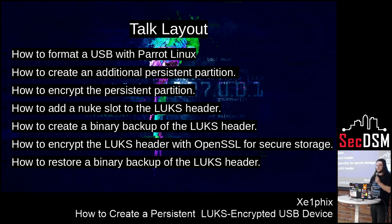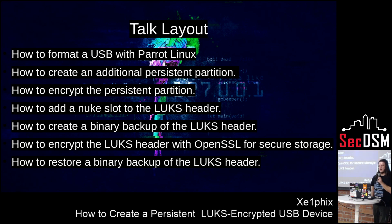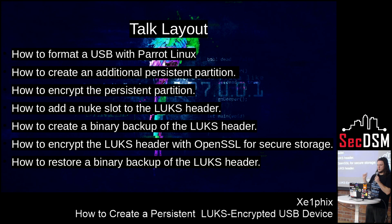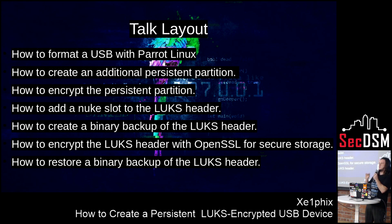So first we're going to go into wiping USB, formatting it with Parrot Linux, and then we're adding a persistent partition. We're going to encrypt the partition, we're going to add a nuke slot, we're going to back up the binary — because what the kill slot does is, once you encrypt the partition and you create a nuke slot, it makes the encrypted partition null and void. So it's better than wiping, because they still have not found a way to actually retrieve the data once you enable the kill slot.